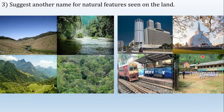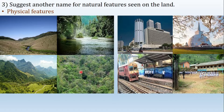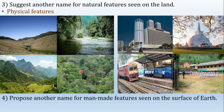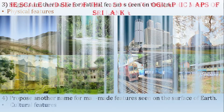Suggest another name for natural features seen on the land — physical features. These four pictures clearly depict natural features that you can see on the land. Next question: propose another name for man-made features seen on the surface of the Earth. These structures are created by humans on the surface of the Earth, therefore we call them cultural features.